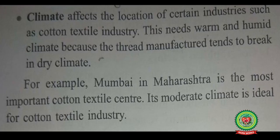The next point is climate. Climate affects the location of certain industries such as cotton textile industry. This needs a warm and humid climate because the thread manufactured tends to break in dry climate. Hence, Mumbai in Maharashtra is the most important cotton textile center — its moderate climate is ideal for cotton textile. All the silk textile industry is situated in the southern part of India where the climate is mild and cool.